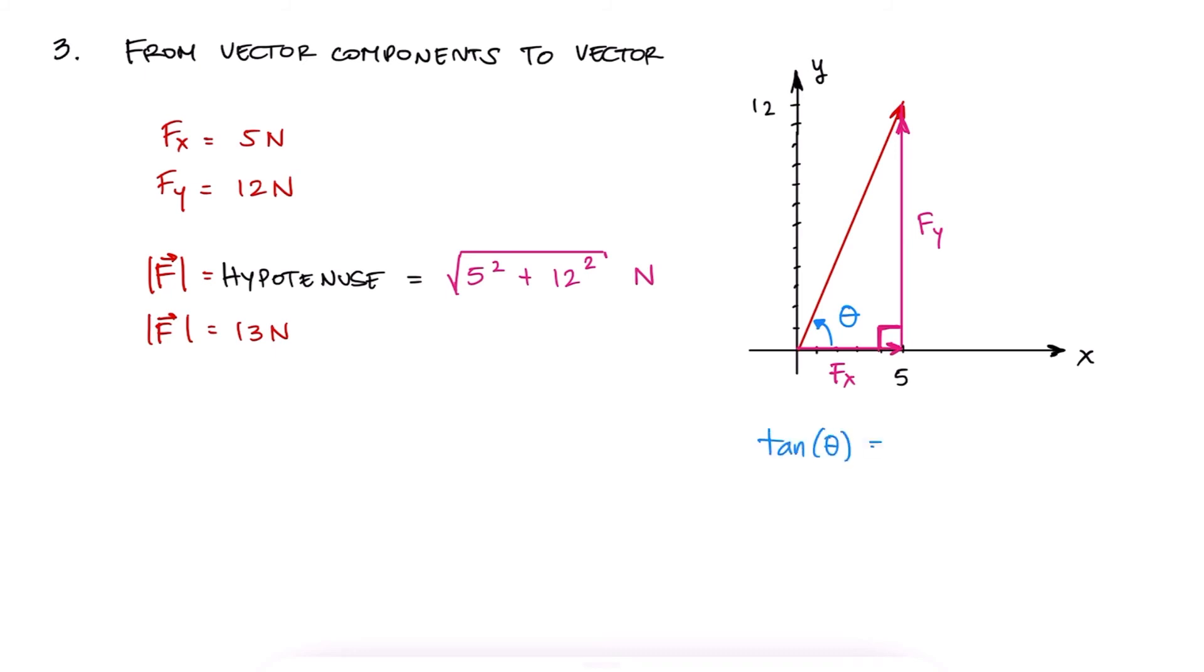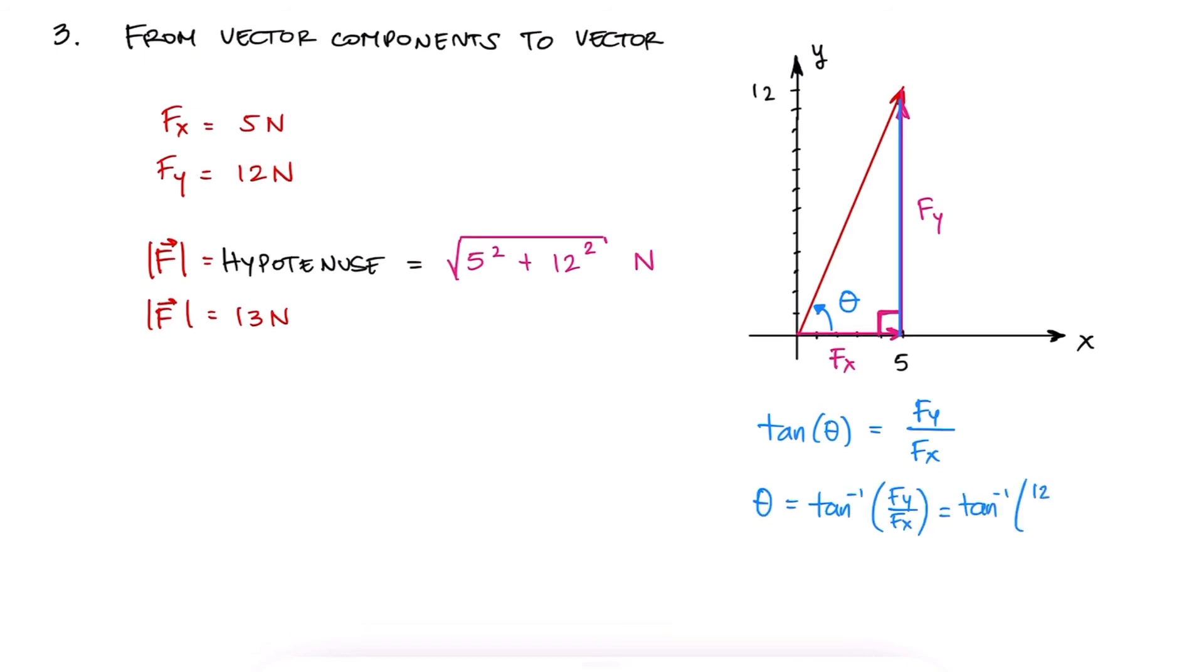To find the direction of the vector, we would use the trig function tangent, which is equal to the length of the opposite side of the given angle over the length of the side adjacent to that angle, and therefore fy over fx. The angle would therefore be the arctangent of fy over fx.